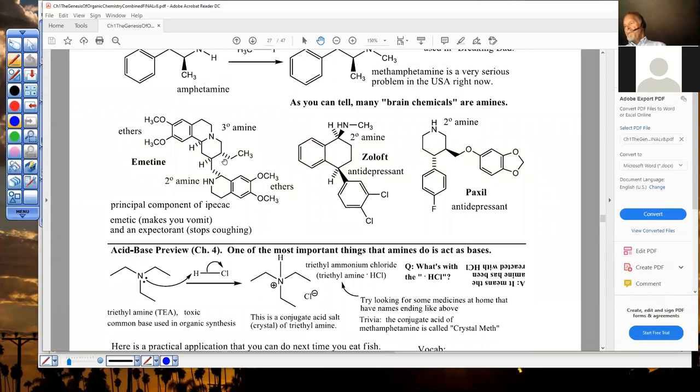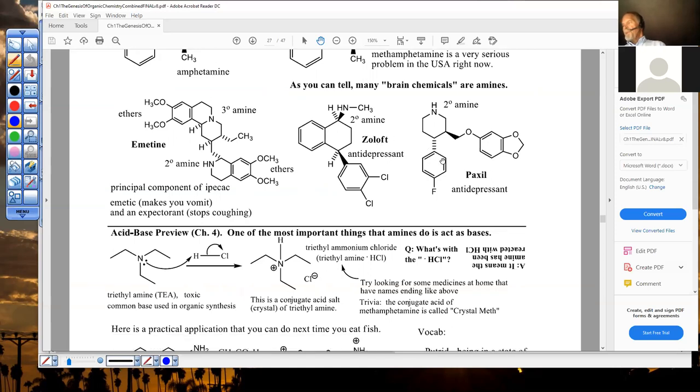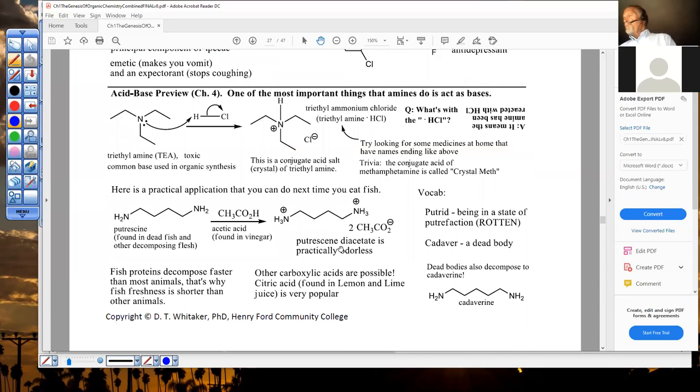This guy's used in Ipecac. And it makes you throw up. So it's what you would take if you ingested poison. Your doctor or pharmacist, if you phoned in an emergency, my baby swallowed a bunch of aspirin pills. They would ask you first if you have Ipecac around. And it's something you might want to consider. Unpleasant amine. These are both pleasant amines. Paxil and Zoloft. They have secondary amines that work much like serotonin does. And they elevate your mood. The most important thing chemically about an amine is that an amine is a base. And in biology, they are often the best base possible in biochemistry.